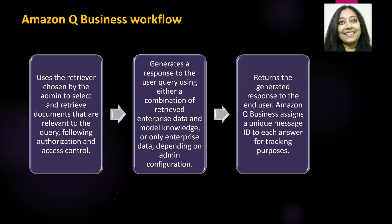This is the generic Amazon Q Business workflow. First, it uses a retriever chosen by the admin to retrieve documents relevant to the query following authorization access control. Then it generates a response using a combination of enterprise data and LLM, or only enterprise data. Finally, it returns the generated permission-aware response to the end user, and assigns a unique message ID to each answer for tracking purposes.